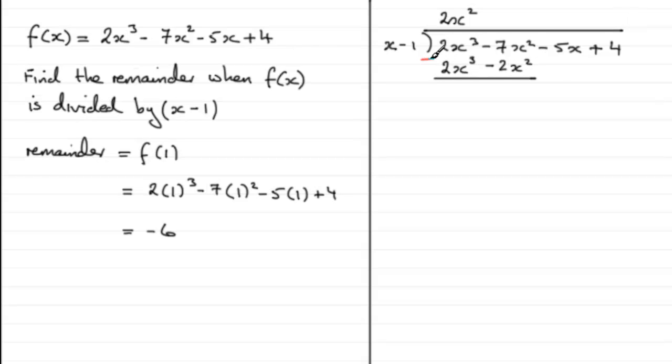And 2x² times the -1 is -2x². We subtract now to find out what the remainder is. So, we get 0 here, 2x³ - 2x³, that gives us 0. And then we've got -7x², minus -2x², which gives -5x². So, put that there.